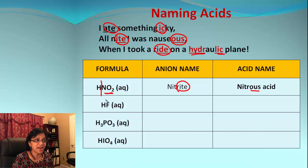Let's take the next example. It is HF, so the anion is fluoride, ending with -ide. We are going to use the last part of the phrase: when I took a ride on a hydraulic plane. So using that, the acid becomes hydrofluoric acid.